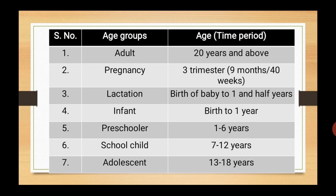We have completed the first part of this unit — we learnt what meal planning is, its aims, and factors to be considered. Now we will study meal planning for different age groups. I have made a chart — you can see it on screen. Adults are individuals 20 years or above. Pregnancy is 9 months divided into 3 trimesters. Lactation starts with birth of baby and extends up to 1 to 1.5 years. Infant: birth to 1 year. Preschool: 1 to 6 years. Schoolchild: 7 to 12 years. Adolescent: 13 to 18 years.